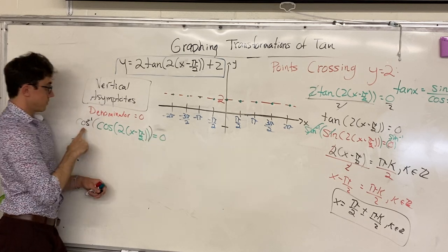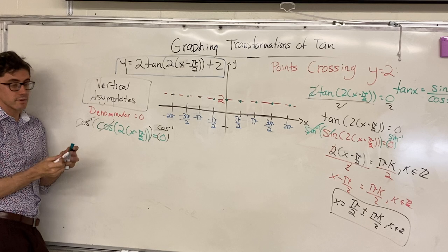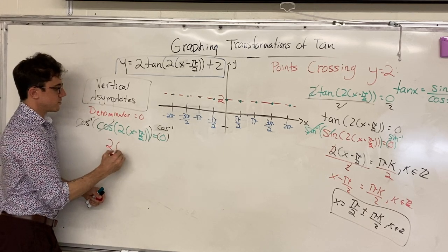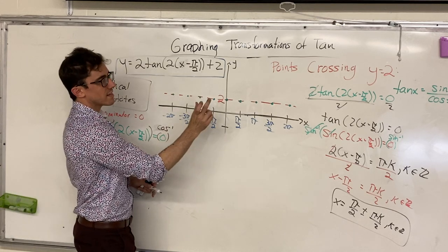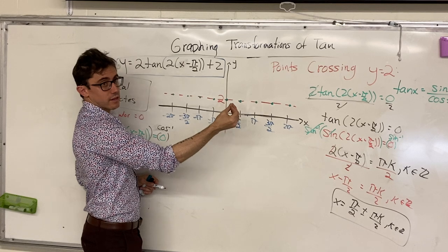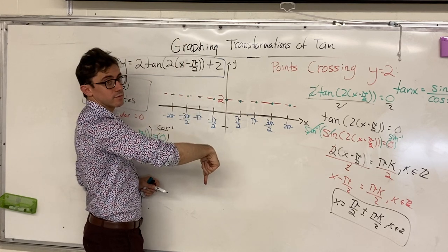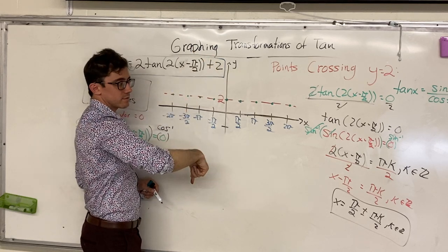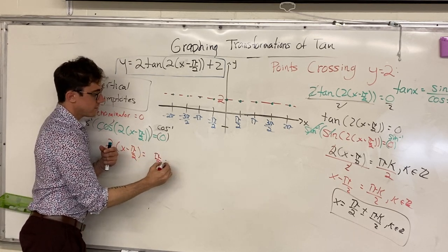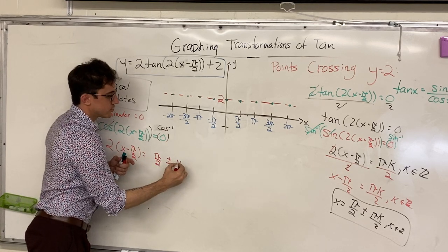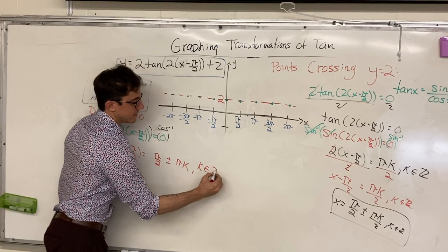We can solve this very similarly to how we solved for the sine. We're going to take the inverse cosine to get rid of the cosine, so we're back to 2 bracket x minus π over 2 is equal to the inverse cos of 0. On the unit circle, the cosine of theta is the x-coordinate, and so the x-coordinate is 0 at π over 2, and then again at 3π over 2, 5π over 2, 7π over 2, and so on. So the inverse cos of 0 is π over 2, and then we can add or subtract any integer multiple of π — that is, k times π where k is any integer.